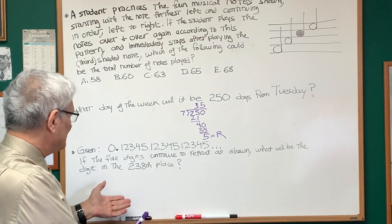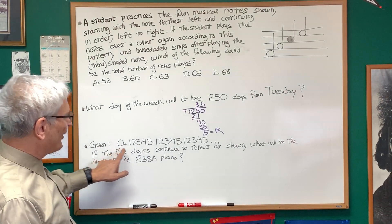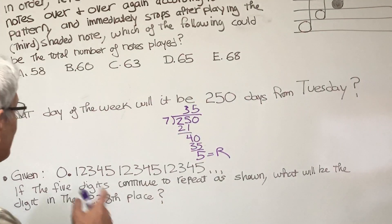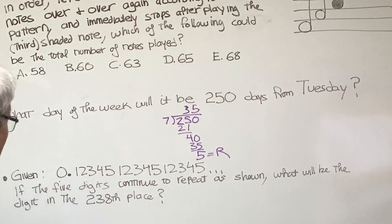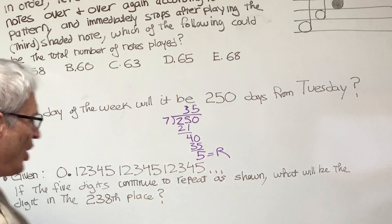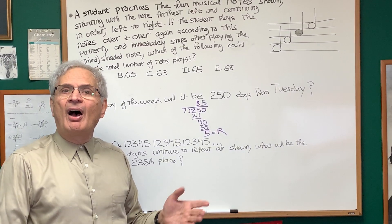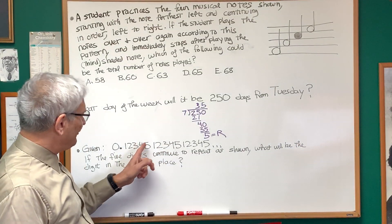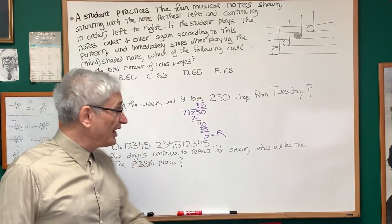A very similar problem here, looking at remainders. Given this decimal number — a repeating pattern — 0.12345, 12345, 12345, etc. If the five digits continue to repeat as shown, what will be the digit in the 238th place? Same thing: every time I count five digits, the number of digits encountered is a multiple of five.